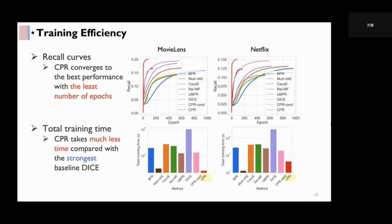And below is the total training time comparison of all methods. The rightmost column is CPR. It takes much less time compared to DICE, the purple column, which is the strongest baseline in previous experiments.